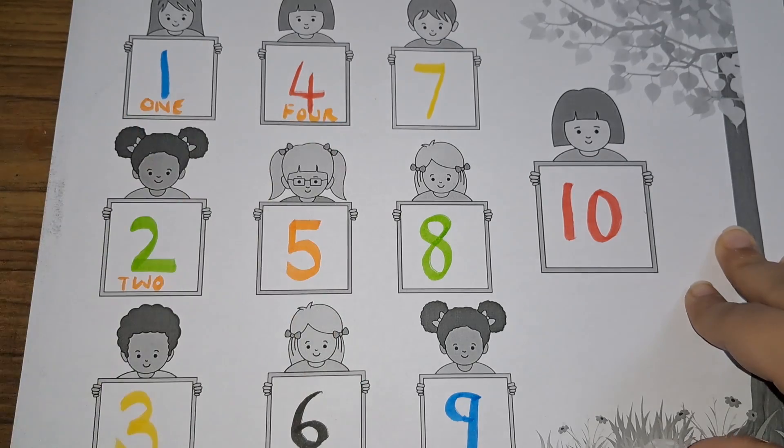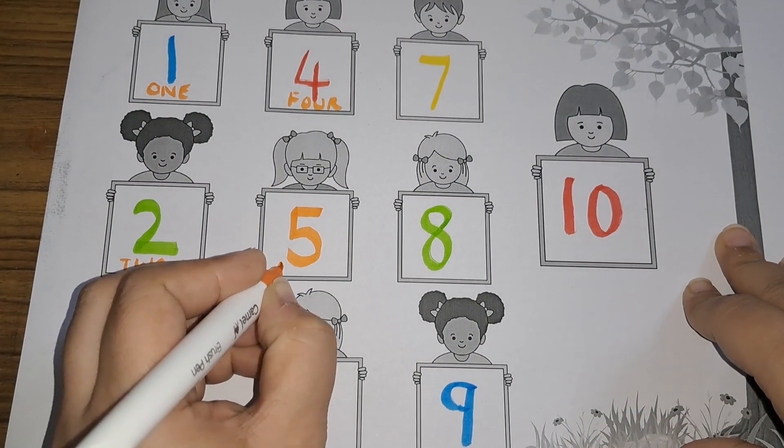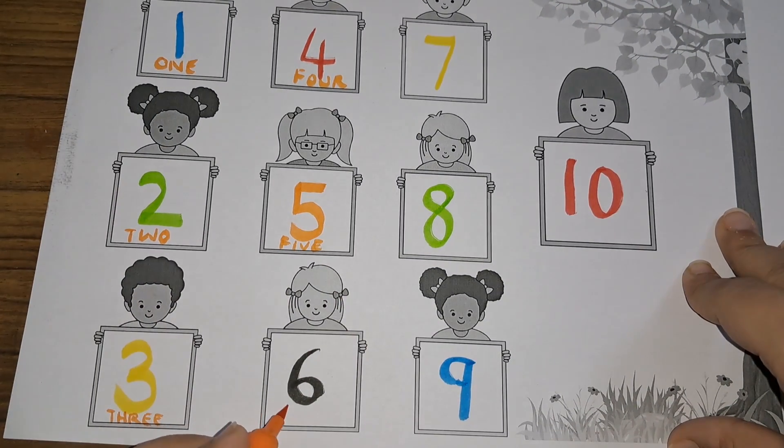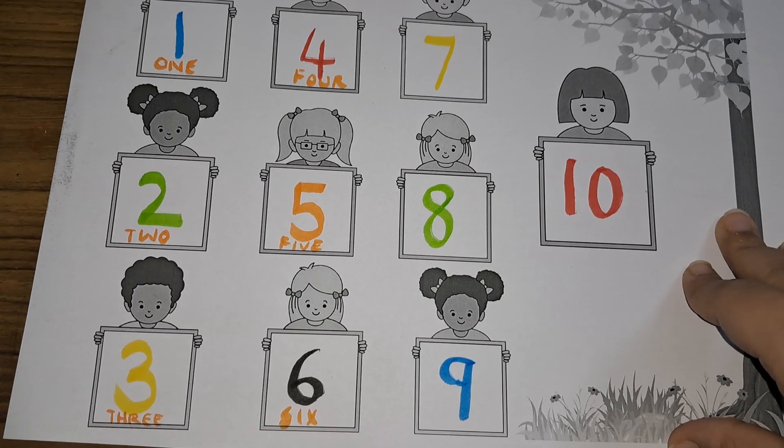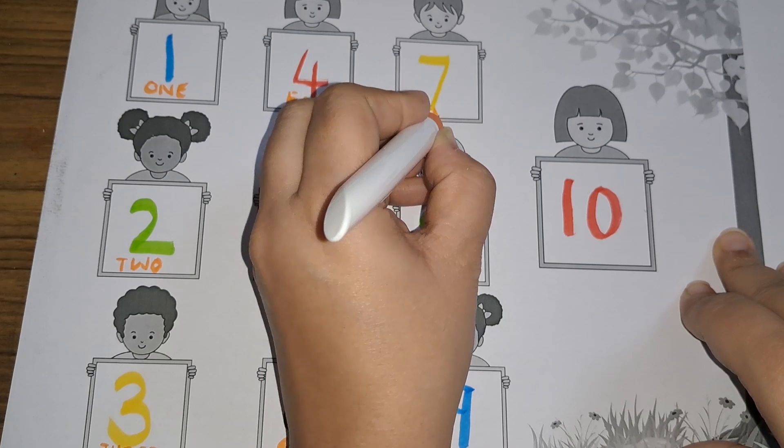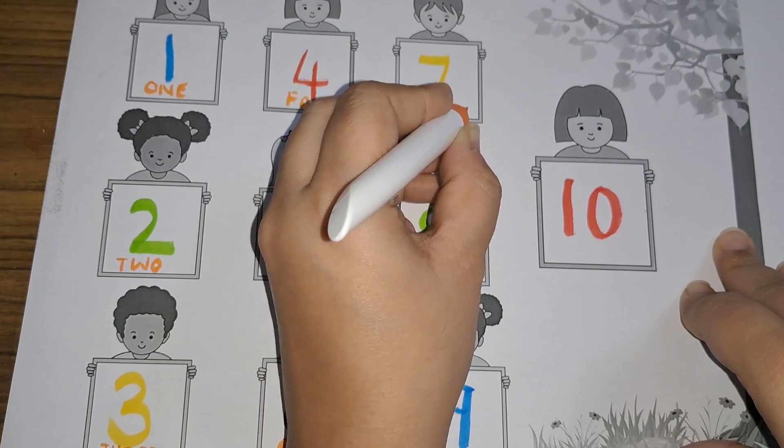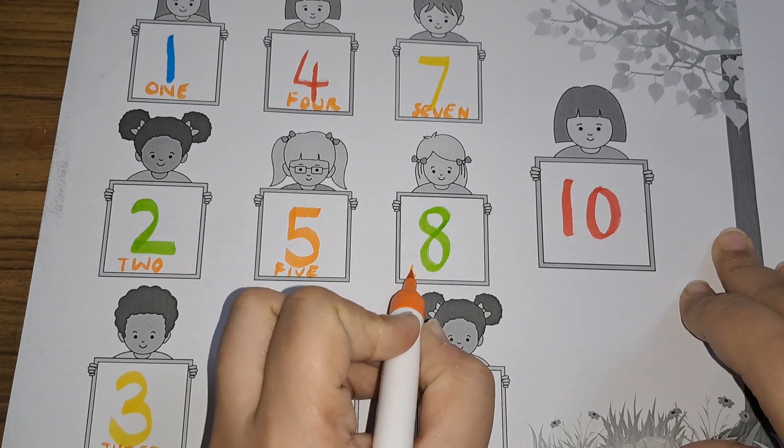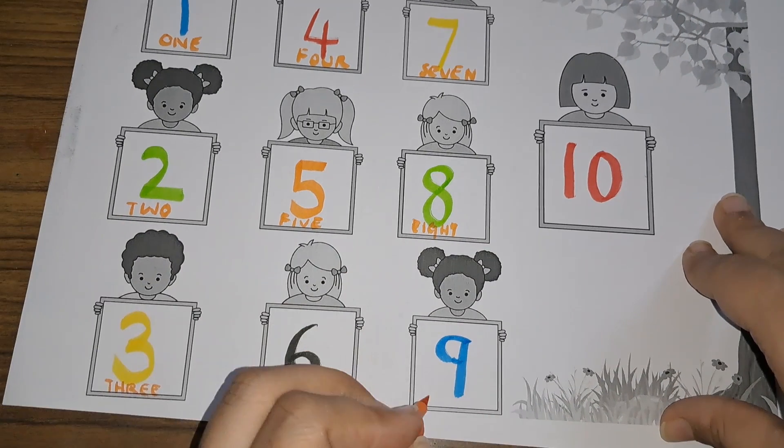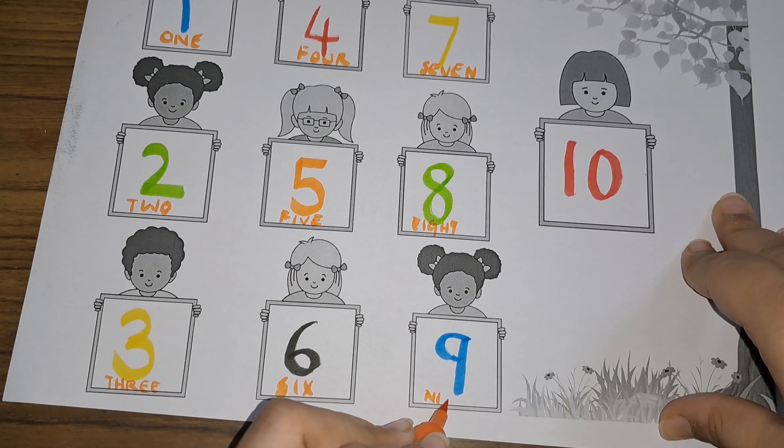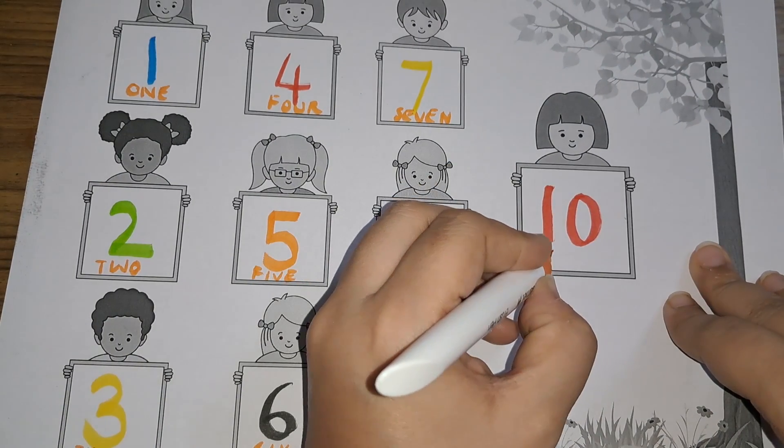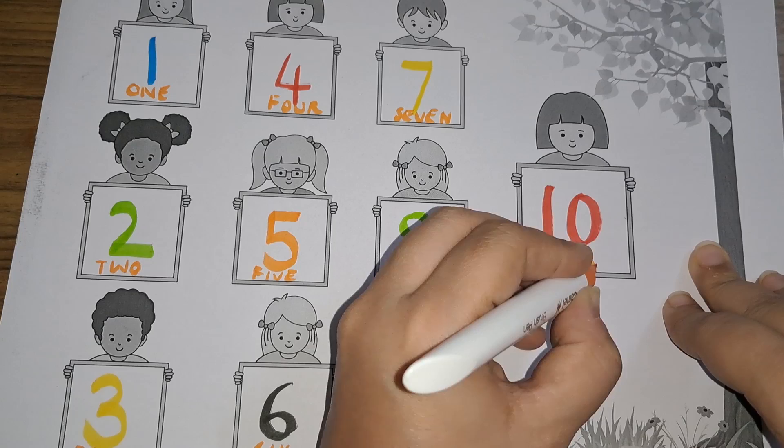Five, F-I-V-E, five. Six, S-I-X, six. Seven, S-E-V-E-N, seven. Eight, E-I-G-H-T, eight. Nine, N-I-N-E, nine. Ten, T-E-N, ten.